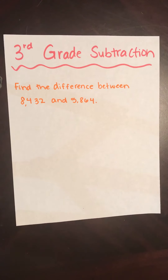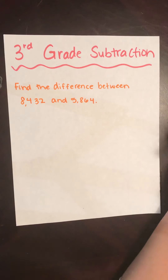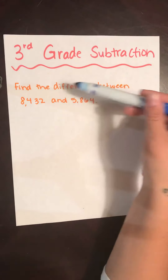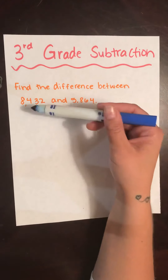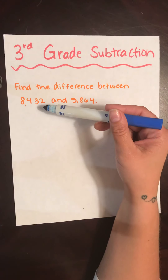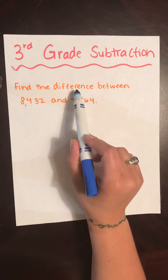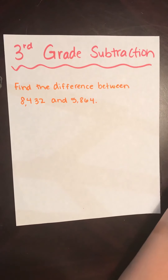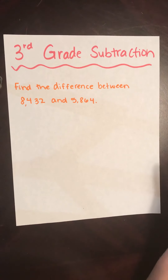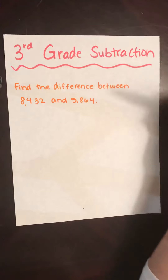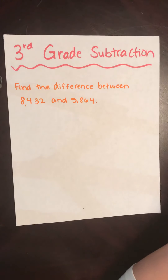So I'm going to start with reading my directions: find the difference between 8,432 and 5,864. We know this math word 'difference' means to subtract, so if I see this on my test I know in order to find the difference I need to subtract.